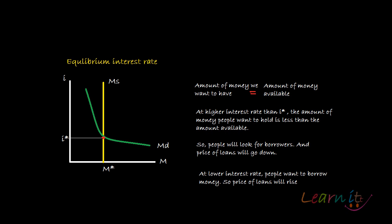Now the point is: what will happen at a higher level of interest rate? At higher interest rate I1 — what will happen at this interest rate? At a higher interest rate than I-star, the amount of money people want to hold is less than the amount available. The amount of money people want to hold is given by MD1.